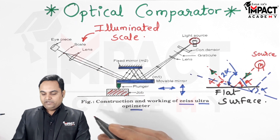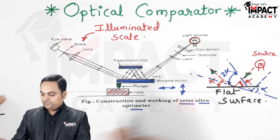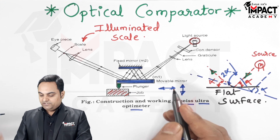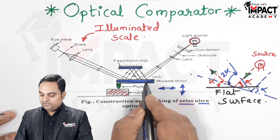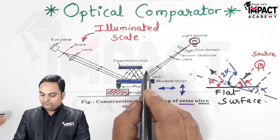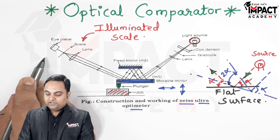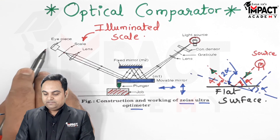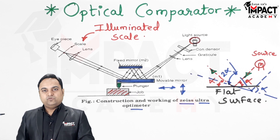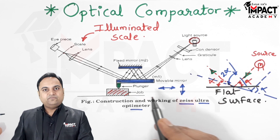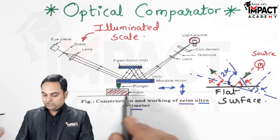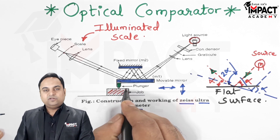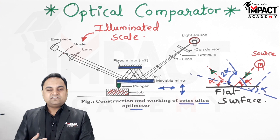When it is a flat surface, the light is incident and reflected at the same angle and we get a reading of zero on the scale, meaning the surface is perfectly flat. But if the surface is inclined, the light incident at angle alpha causes mirror M1 to tilt, and the light reflects back at 2-alpha, again coming onto the movable mirror and reaching the observer at 2-alpha. The illuminated scale glows and if the reading is away from zero, it means the surface is tilted.